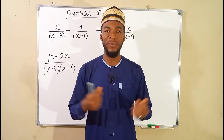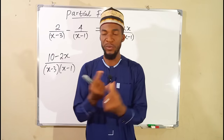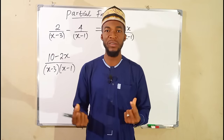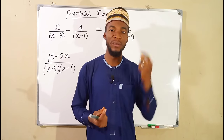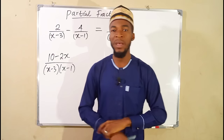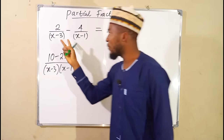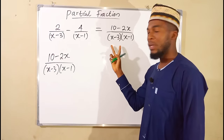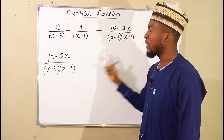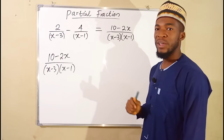In some of our previous lessons, you have seen how to simplify different unit of fractions to obtain a single fraction. So those simple fractions are the ones we are referring to as partial fractions of that single fraction. I have two unit of fractions here and I simplify them to obtain the single fraction. This single fraction is called a compound fraction, and these ones are the partial fractions of this compound fraction.